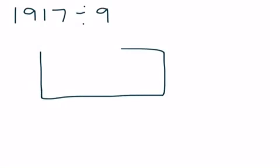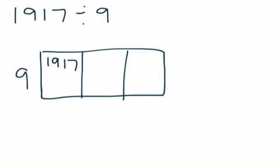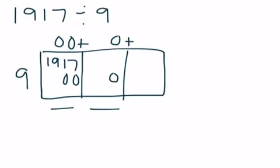So, the next problem is 1,917 divided by 9. So once again, I'm going to draw my area box. I'm going to use just three boxes here. When you set these up, you want to put the big number, the dividend, in the first box, and your divisor, the 9, on the side. My job right now is to figure out how many hundreds will go into 1,917 if I'm multiplying by 9.